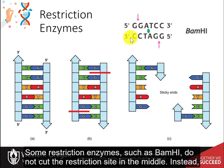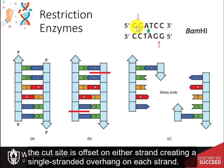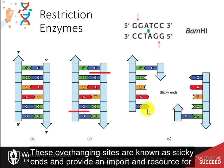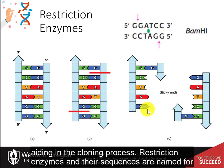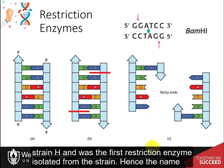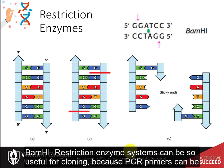Some restriction enzymes, such as BamHI, do not cut the restriction site in the middle. Instead, the cut site is offset on either strand, creating a single-stranded overhang on each strand. In the case of BamHI, it cuts the palindrome sequence after the G's. These overhanging sites are known as sticky ends and provide an important resource for aiding in the cloning process. Restriction enzymes and their sequences are named from the organisms from which they were derived. BamHI is from Bacillus amyloliquefaciens strain H and was the first restriction enzyme isolated from this strain, hence the name BamHI.